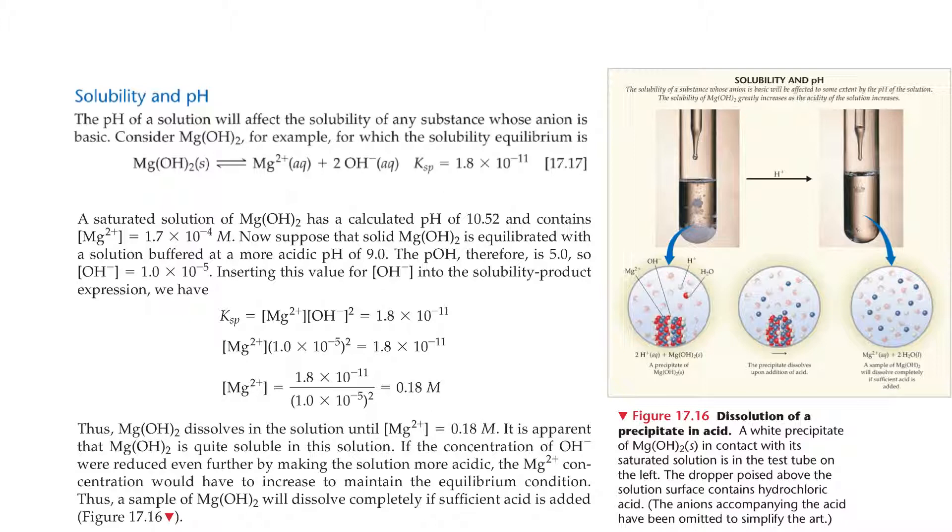Thus, magnesium hydroxide dissolves in the solution until the concentration of magnesium ion is 0.18 M. It's apparent that magnesium hydroxide is quite soluble in this solution. If the concentration of hydroxide was reduced even further by making the solution more acidic, the magnesium concentration would have to increase to maintain the equilibrium condition. Thus, a sample of magnesium hydroxide will dissolve completely if sufficient acid is added.